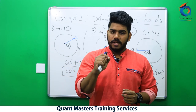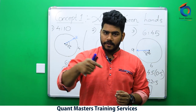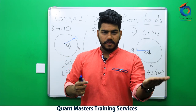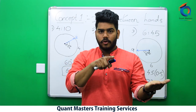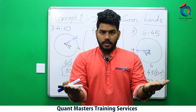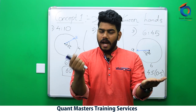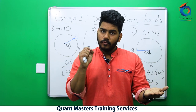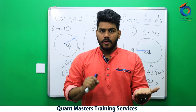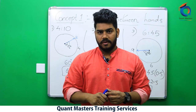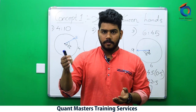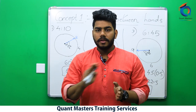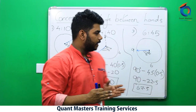Example: 7:45. Hour hand at 7, minute hand at 9. Difference is 2 divisions = 60 degrees. Hour hand deflected by 45 minutes; half of 45 = 22.5 degrees. At 7:45 the hour hand moves towards the minute hand — minus. Answer: 60 minus 22.5. 60 minus 20 = 40, minus 2 = 38, minus 0.5 = 37.5 degrees. These types of sums we can do without even touching the pen.